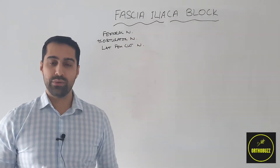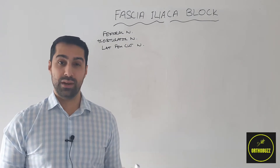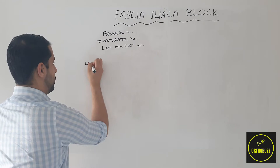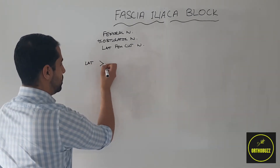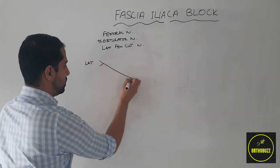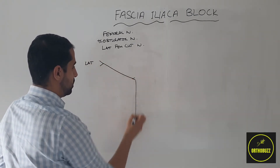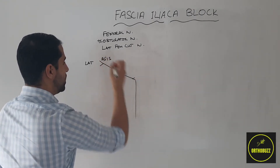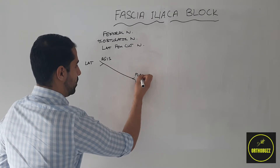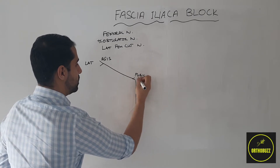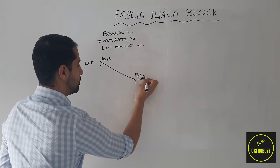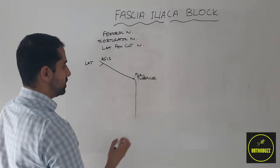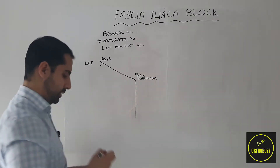To understand how it does this, we need to look at the anatomy in a little bit more detail. Let's draw a diagram. We have our anterior superior iliac spine, our pubic tubercle, and so this is the lateral side and this is the midline of the patient.